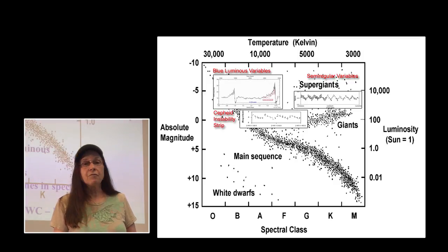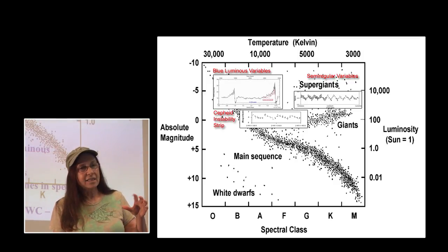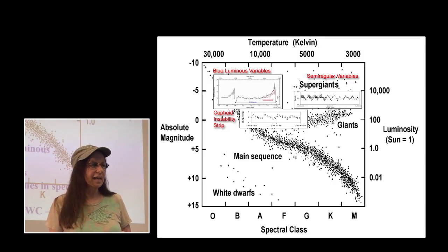The Cepheid variables that are transitioning are less massive than those, but still transitioning off the HR diagram through the Cepheid instability strip and pulsating as they move towards their final Type II supernova event.